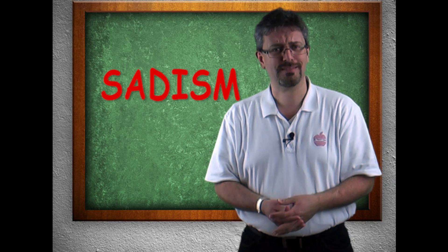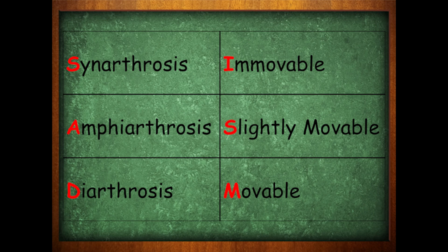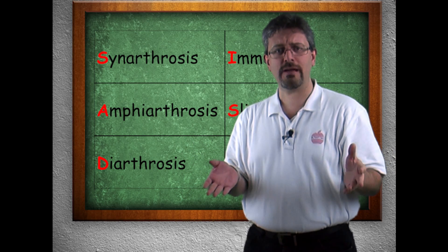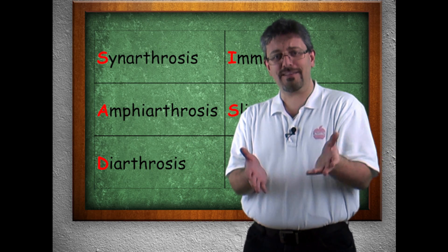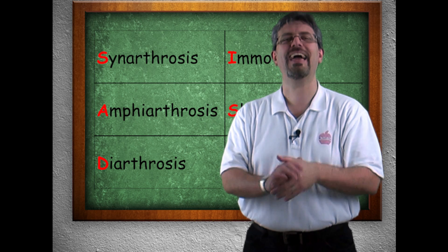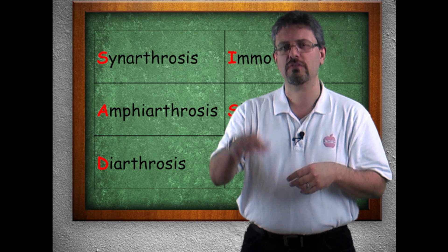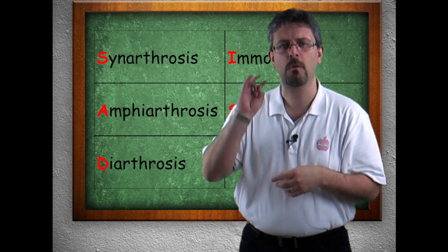And I said, this has what to do with anything? And then she was like, look, synarthrosis, amphiarthrosis, diarthrosis, right? Immovable, slightly movable, movable. S-A-D-I-S-M. Brilliant, great way to remember it. I'm telling your parents! But remember that: synarthrosis, amphiarthrosis, diarthrosis—immovable, slightly movable, movable.